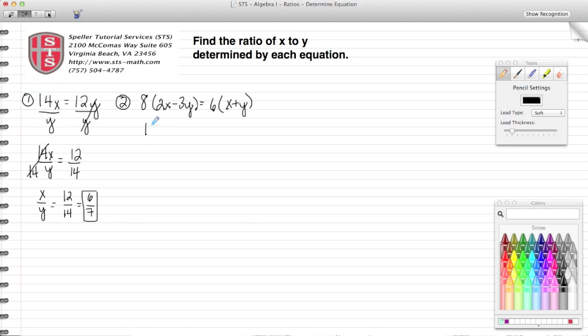Let's begin by distributing 8 to both of these terms. So 8 times 2 gives me 16x minus 8 times 3y, giving me 24y, and that's equal to—here I'm going to distribute the 6 to both terms—giving me 6x plus 6y.